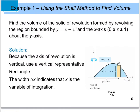Let's look at example 1. Find the volume of the solid of revolution formed by revolving the region bounded by y equals x minus x cubed and the x-axis between 0 and 1, revolved around the y-axis. Sketch the region for a visual. Because I'm doing the shell method, I want a rectangle parallel to the axis of revolution, so I'll choose the vertical rectangle. The width is delta x, the height is x minus x cubed, and we integrate from 0 to 1.